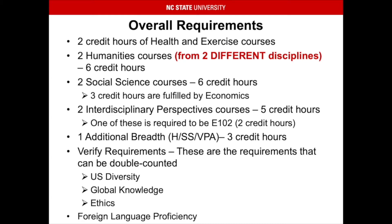You are required to take the following: two credit hours of health and exercise courses; two humanities courses from two different disciplines totaling six credit hours; two social science courses, again totaling six credit hours, three of which must be fulfilled by your required economics course; two interdisciplinary perspectives courses totaling five credit hours, two of which are required to be E102; and one additional breadth course totaling three credit hours. This must come from the humanities, social sciences, or visual performing arts list.